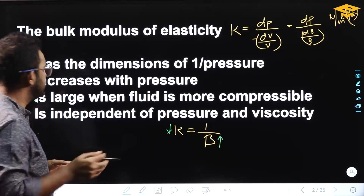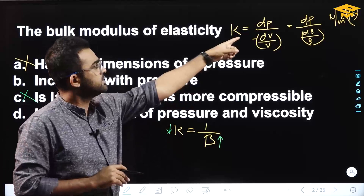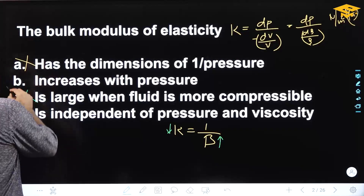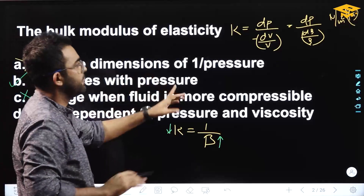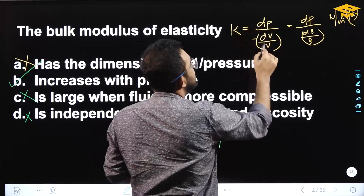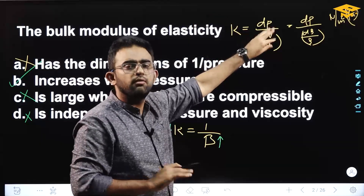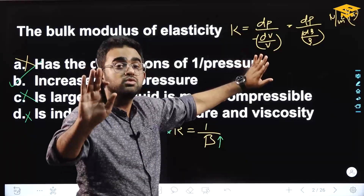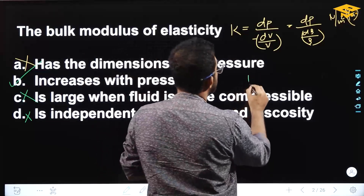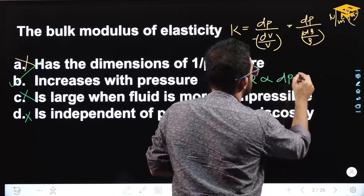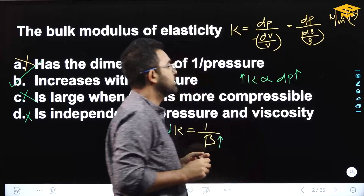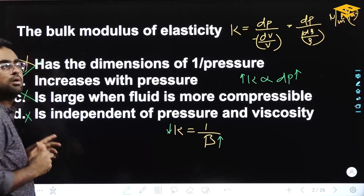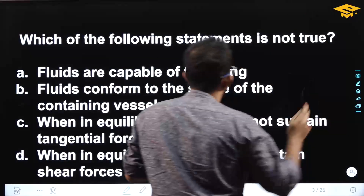Option C says it is independent of pressure — that is 100% incorrect since K is dependent on pressure. The correct answer is option B: bulk modulus of elasticity increases with pressure. Option B is our right answer.